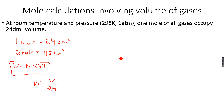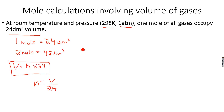Moving forward to mole calculations involving volume of gases. At room temperature and pressure, one mole of all gases occupies 24 dm³. Room temperature is 298 K and atmospheric pressure is 101 kPa. So one mole occupies 24 dm³, two moles occupy 48 dm³, three moles occupy 72 dm³, and so on. The formula is V equals n times 24, where n is the number of moles and V is the volume.